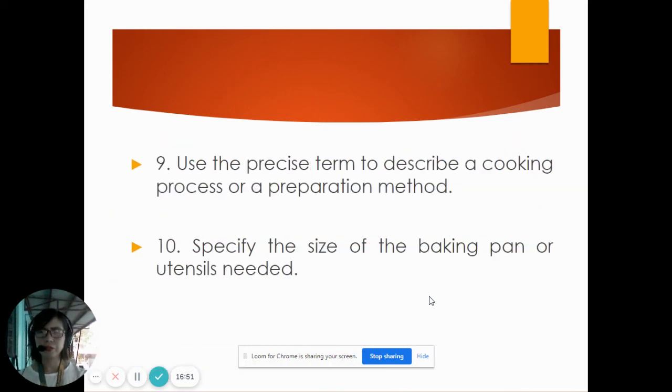Number nine: use the precise term to describe cooking process or preparation method, because there are different methods according to their use. You should use the correct term or cooking term or cooking method or preparation method in constructing your recipe procedure or directions. For example, do not say mix when you mean fold or beat. So to fold the butter and the meringue, you should say fold, not mix. Fold in the butter and the meringue.